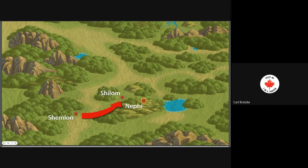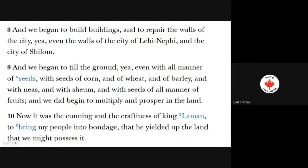So they're in the hills above Nephi, and Zeniff goes down and makes a treaty with the Lamanite king to possess the land that his forefathers had. Verse 8: 'And we began to build buildings and to repair the walls of the city — yea, even the walls of the city of Lehi-Nephi. And we began to till the ground with all manner of seeds, with the seeds of corn and of wheat and of barley and neas and shum, with the seeds of all manner of fruits. And we did begin to multiply and prosper in the land. Now it was the cunning and craftiness of King Laman to bring my people into bondage that he yielded up the land that we might possess it.' The Lamanite king was playing the long game here, because they have peace for 10 years.